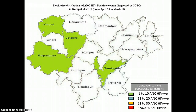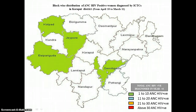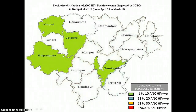This is the block-wise distribution of ANC. Among all 14 blocks of Koraput, ANC positivity is noticed only in 4 blocks: Vaipari Guda, Koraput, Jayapur, and Simdiguda. Simdiguda has the highest with 3 ANC positives, and the remaining 3 blocks have 1 ANC positive case each.